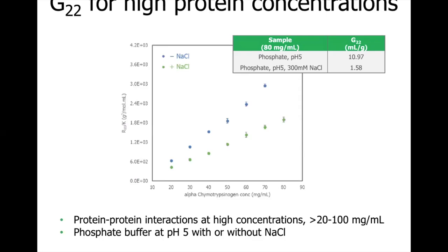B22 and Kd enable characterization of colloidal stability for protein concentrations of up to 20 mg/mL. For higher concentrations, we can use UNCLE's G22 application which accounts for molecular crowding conditions. Here we have an example of G22 data for a protein in phosphate buffer with and without sodium chloride. Strong upward trends for both conditions suggest net attractive interactions, and G22 values for phosphate buffer without sodium chloride are highest, suggesting stronger attractive forces.